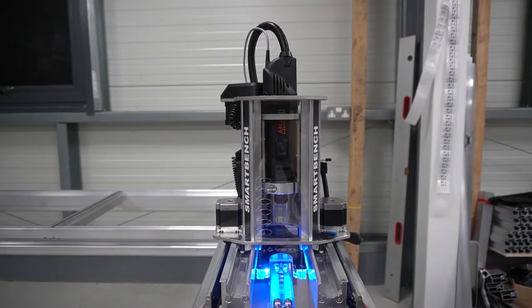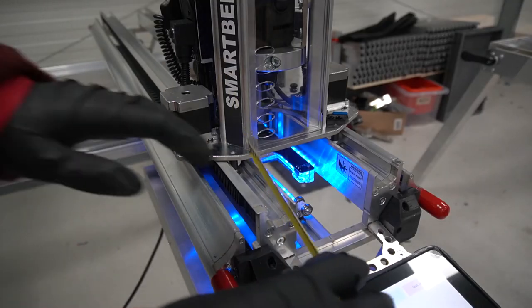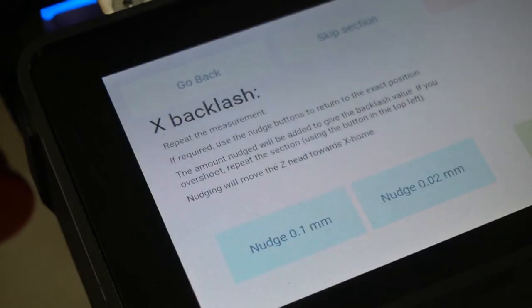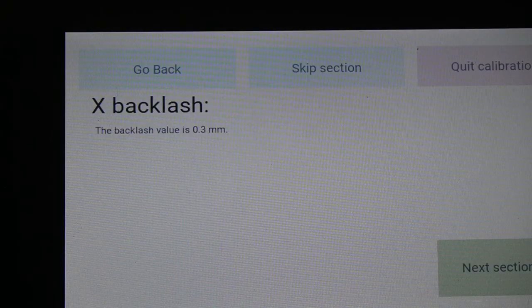The axis will be moved backwards and forwards attempting to return to the same point. Repeat your measurement again and if necessary use the nudge buttons to return to the same position. When you're happy the measurement is the same, press OK and you will be told the backlash value.